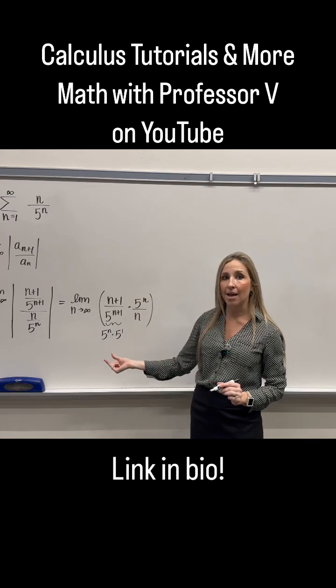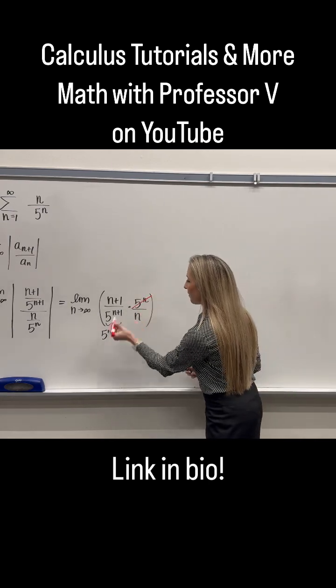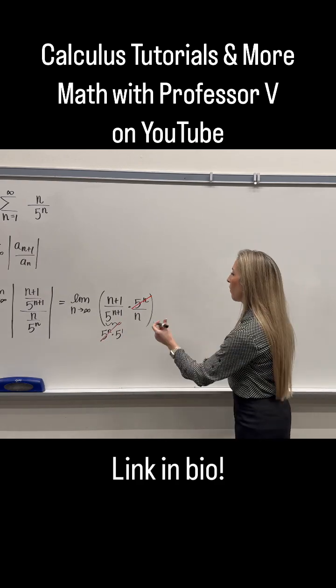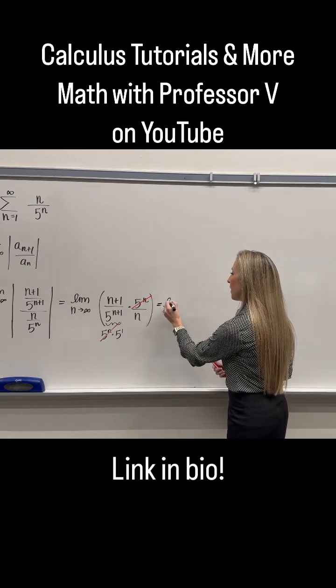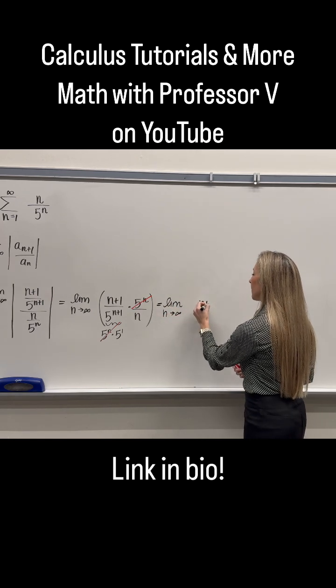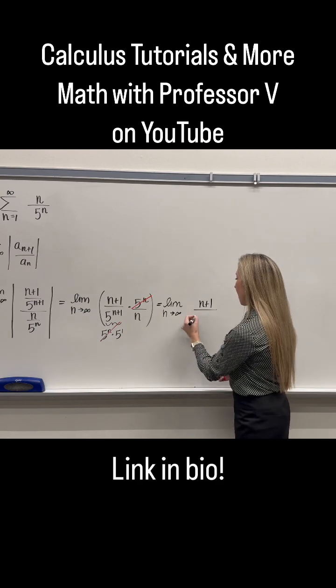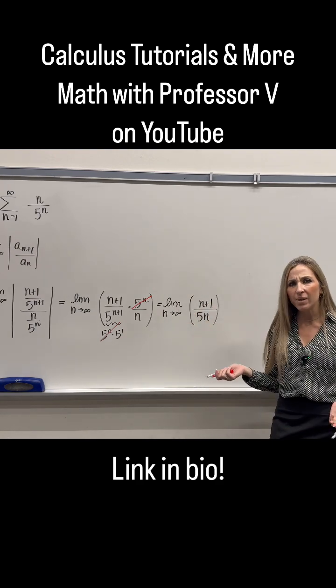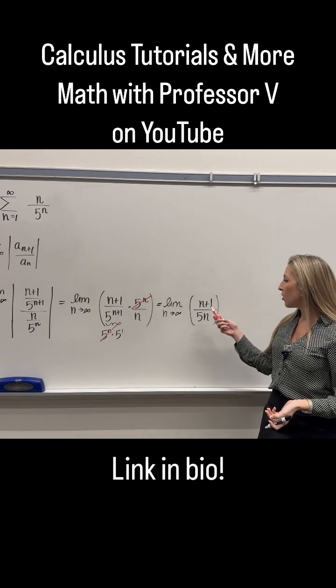So now 5 to the n is gone. Let me rewrite what we have so far so you're not overwhelmed. This is now the limit as n approaches infinity. I have n plus 1 over there's just that 5 left and n.